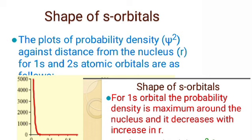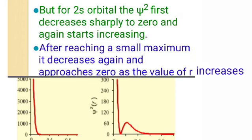The probability of finding the electron near to the nucleus is maximum. As distance increases away from the nucleus, the electron probability density decreases. This is the case for the 1s-orbital curve.